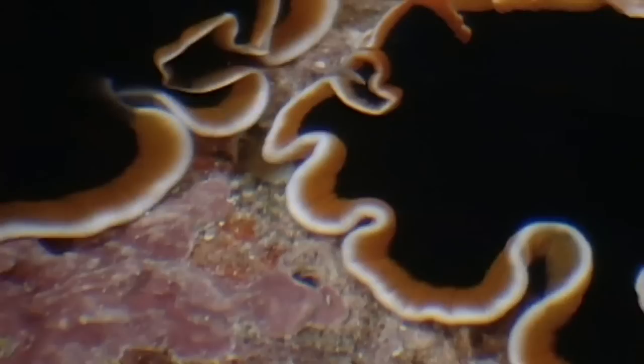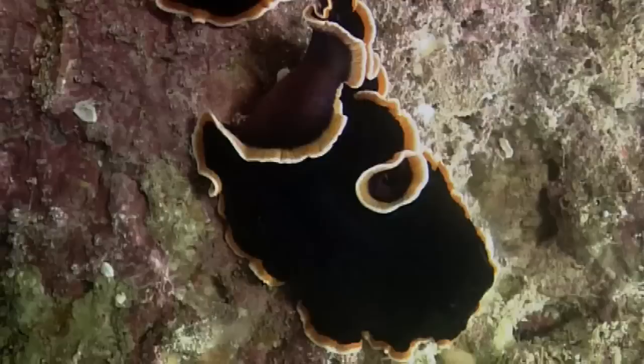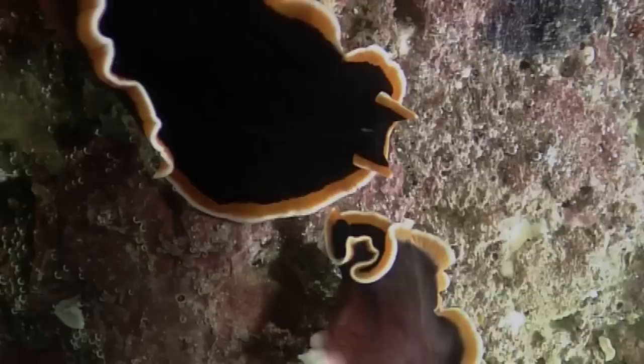We may never know what the first animal courtship was like, but these flatworms can show us how even simple animals add their own twist. For them, sex is more like war than love. It's known as penis fencing, and the worms are the swordsmen.